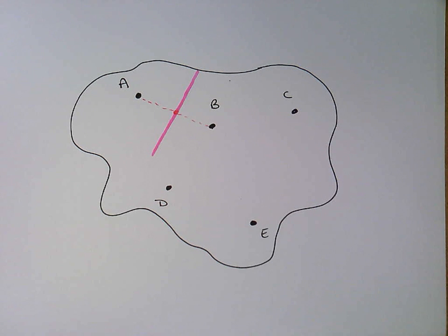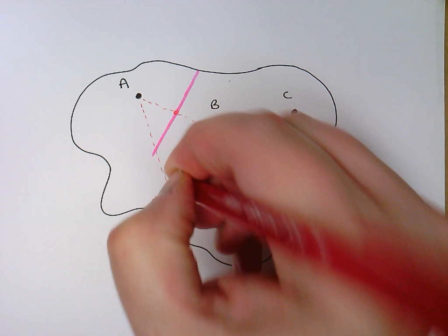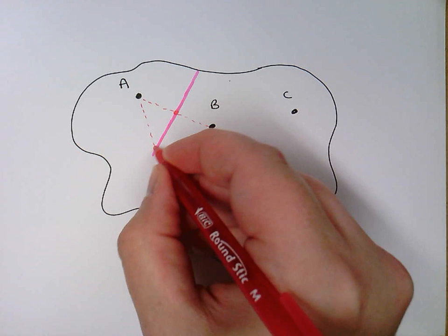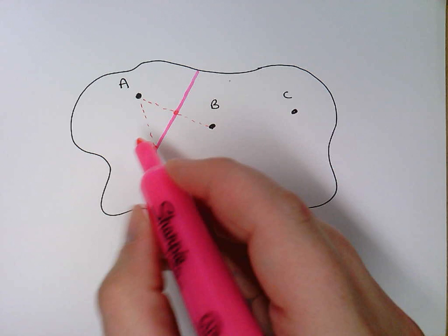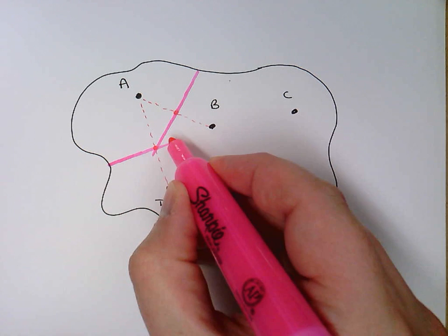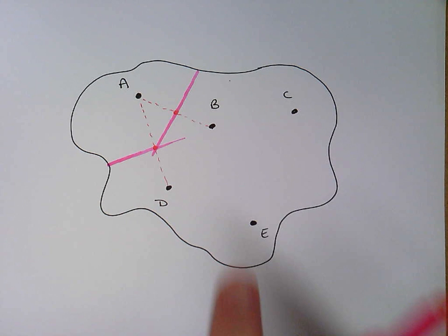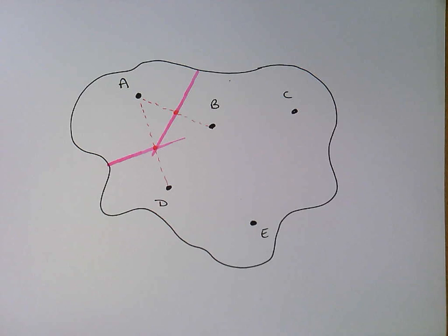But while we're at it, let's do A and D. The middle point's about there. So the perpendicular bisector there would look like this. I could continue it over there. But again, by the time I'm over to about this area, I can see anything that I draw is going to be closer to B than it is to D. So I'm not going to worry too much about it. Let's do one between B and D.